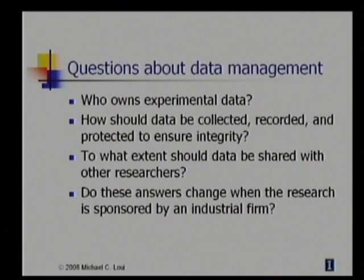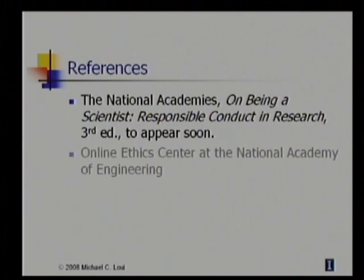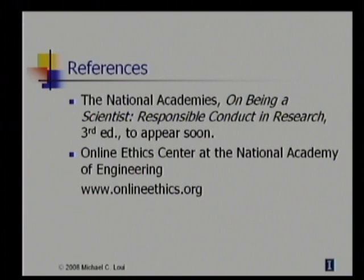A very good introduction to ethical issues in scientific research, including engineering research, is the report Being a Scientist: Responsible Conduct in Research, issued by the National Academies — the National Academy of Sciences, National Academy of Engineering, and Institute of Medicine. The second edition has been available since the mid-1990s, and a third edition will appear soon. In addition, the online ethics center at the National Academy of Engineering has a large collection of materials related to ethics in research as well as ethics in engineering.